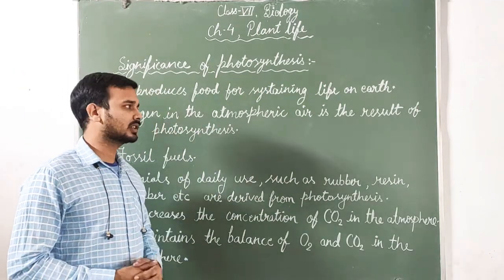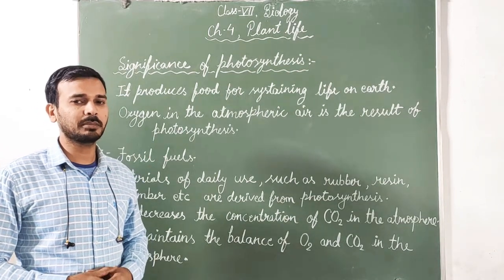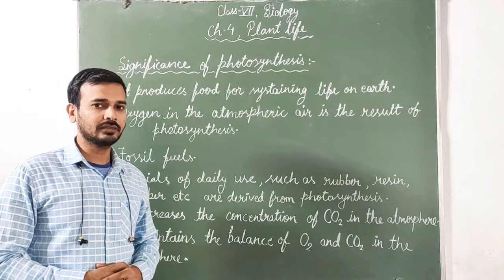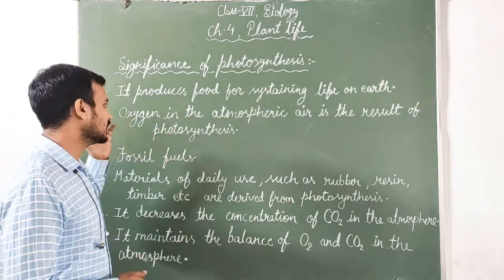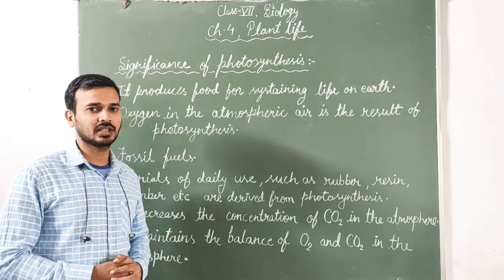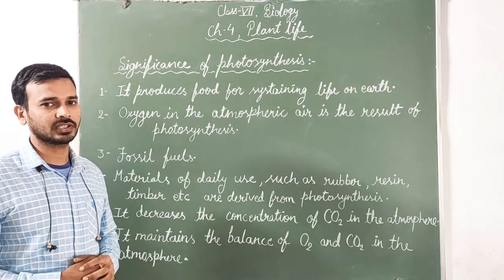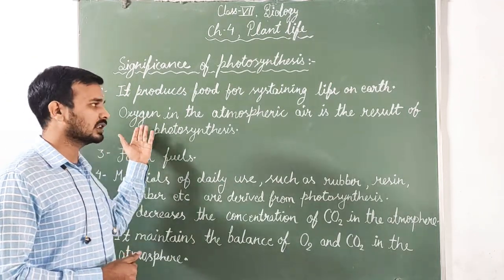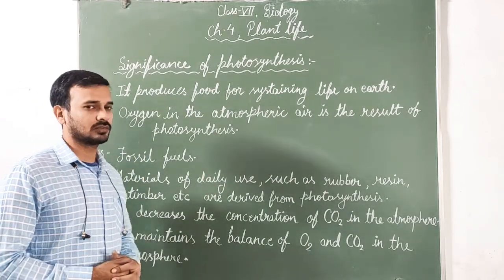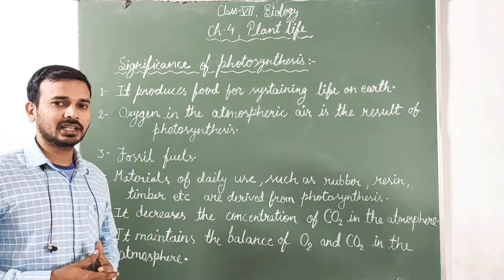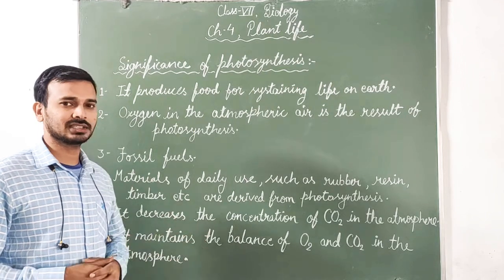Point two: oxygen in the atmospheric air is a result of photosynthesis. Oxygen is an important and essential part of life for us and other animals. We and other animals use that oxygen for respiration. The oxygen we take from the atmosphere is produced as a result of photosynthesis.